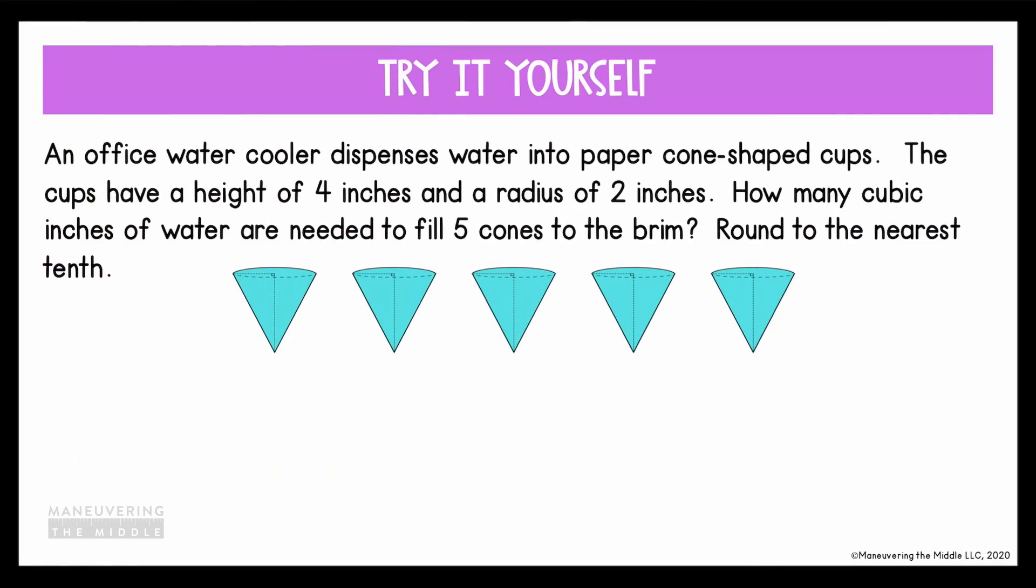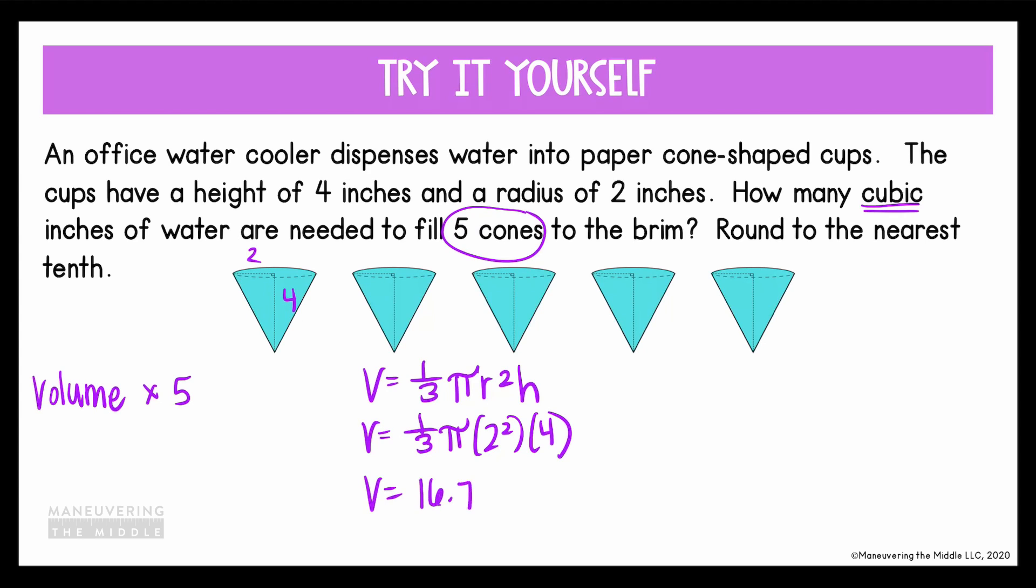Okay, try this last problem. An office water cooler dispenses water into paper cone-shaped cups. The cups have a height of 4 inches and a radius of 2 inches. How many cubic inches of water are needed to fill 5 cones to the brim? Round to the nearest tenth. So they asked for cubic inches, meaning we know it's volume. All of these cones are shaped the same. So we can find the volume of one cone and multiply it by 5. Let's start with our formula: 1/3, instead of big B, I'm going to write the area of the base times the height. So each cone, the radius is 2 and the height is 4. So if you multiply through and get the volume of one cone, you get about 16.755. We want the volume for 5 cones though. So if I multiply this by 5, that gives me 83.8 and we're in inches, so inches cubed.